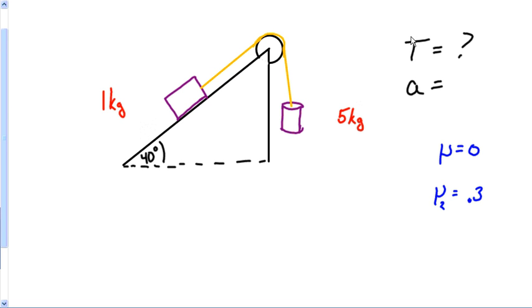First of all, it's a connected object problem, so I need two free body diagrams. So I'm going to come down here, and I'm going to make two free body diagrams. I wish I could do a better job making straight lines in this. So I'm going to make two free body diagrams.